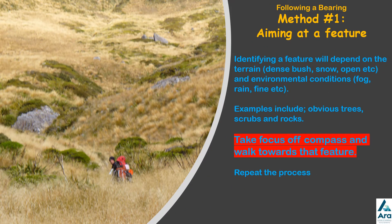That feature will depend on a number of things: the terrain that you're in — whether it's bush, open, sub-alpine terrain, on the snow — and the environmental conditions, so whether it's fog, rain, fine, etc. Examples might include an obvious tree, shrub, obvious rock outcrop or prominent rock. So if you look here, this is where this person is, and their bearing takes them directly towards this prominent rock here, and so that's where they would identify as a feature to walk towards.